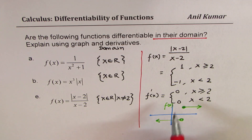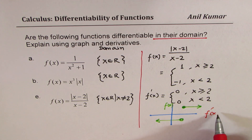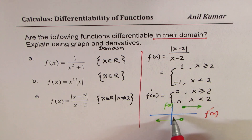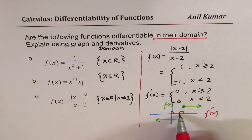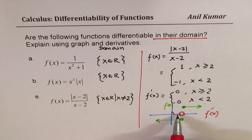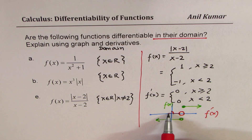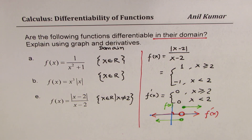If I sketch the graph of the derivative, it is not defined at x equals 2 because there is a jump discontinuity there. However, elsewhere the derivative is 0.